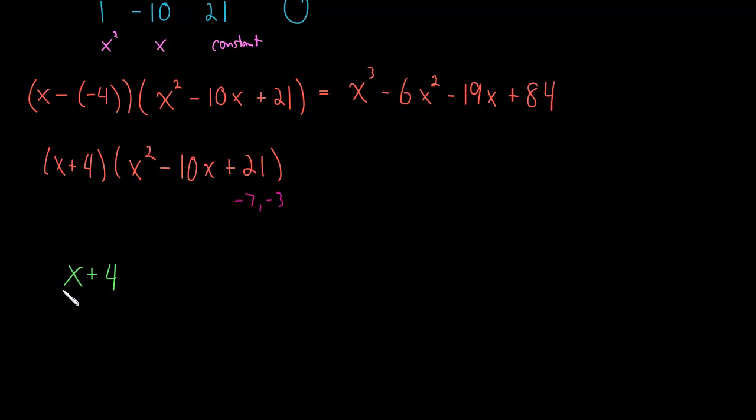So all in all, our final answer is this polynomial factors as x plus 4, and then we factor this quadratic into x minus 7 and x minus 3. And this is equal to our original polynomial. So we have now fully factored the polynomial we were given.